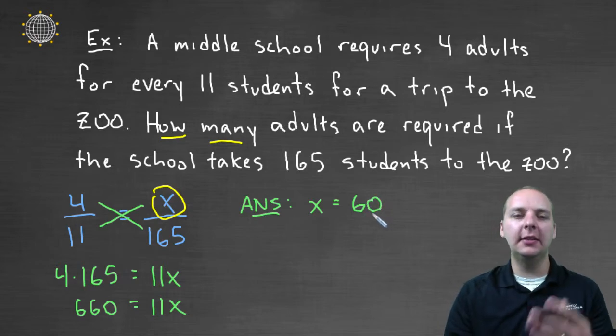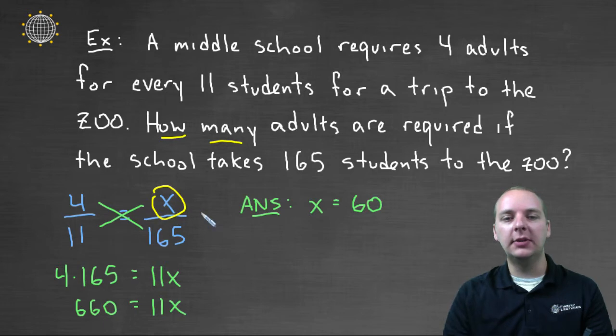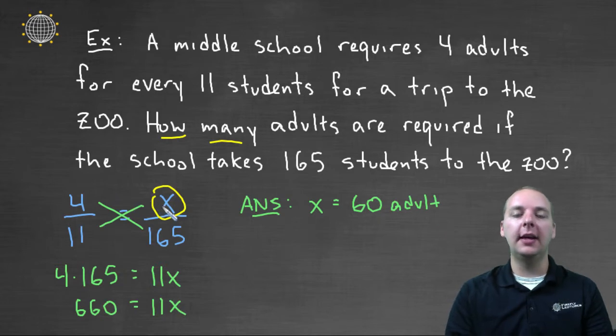And so what is sixty? Let's make sure we put the correct units, being that this is a word problem. x was the number of adults required to chaperone the trip if they're taking a total of a hundred and sixty-five students. And that'll maintain the ratio four to eleven, four adults to every eleven students.